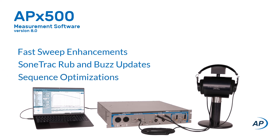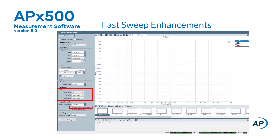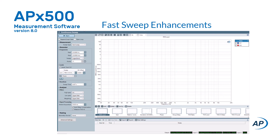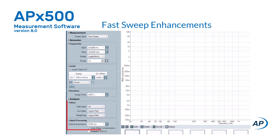Let's take a quick look at each of these feature enhancements. For THD+N level and ratio results, measurement-specific filtering options and automatic delay compensation capabilities have been added to acoustic response, continuous sweep, and loudspeaker production test measurements when using a fast sweep stimulus. Using the fast sweep stimulus for THD+N level and ratio measurements provides a significantly faster measurement time compared to standard step sweeps. When fast sweep is selected, the filtering and auto delay compensation options are available in the measurement panel, allowing you to set local high-pass, low-pass, and weighting filters for the selected measurement.